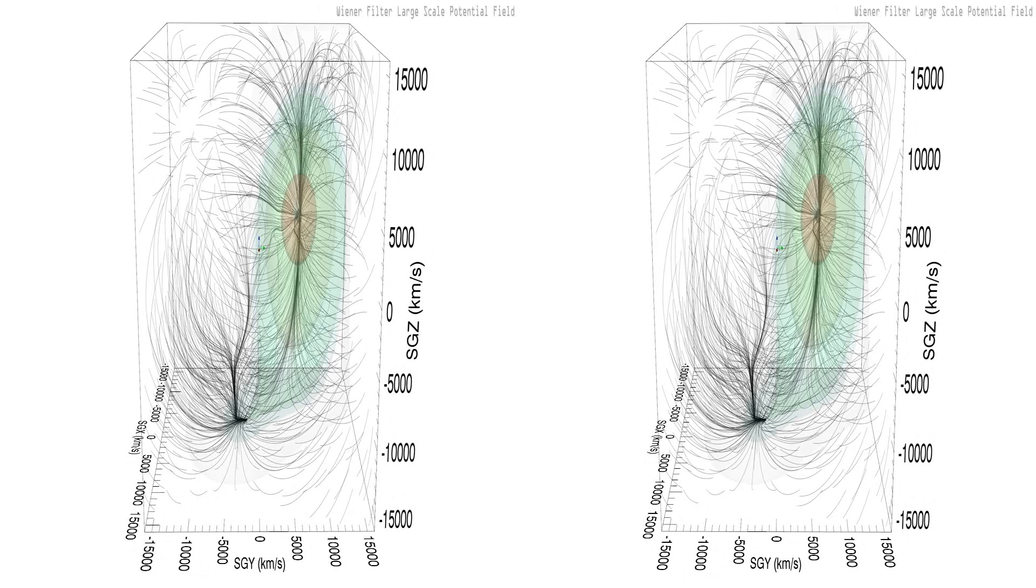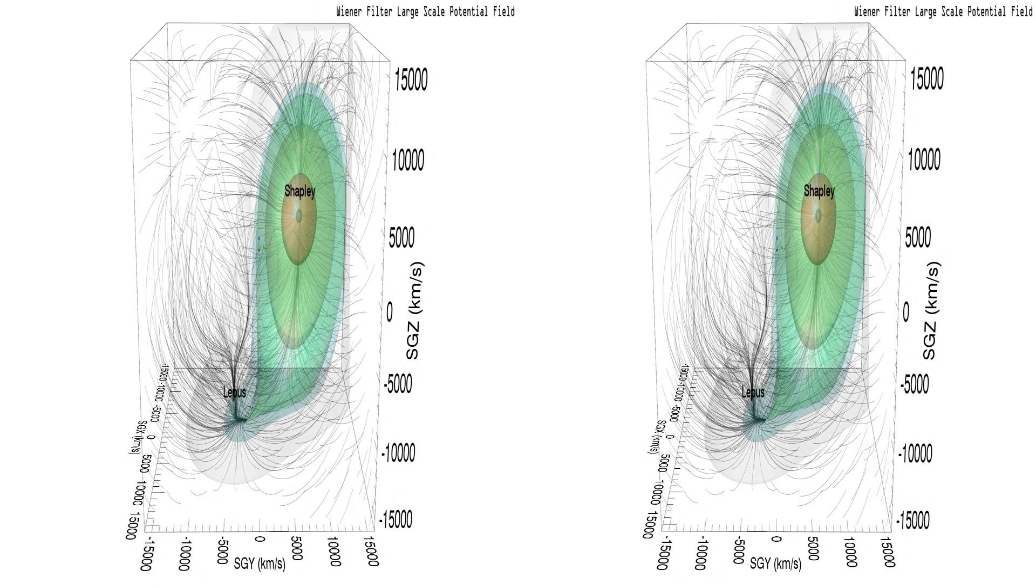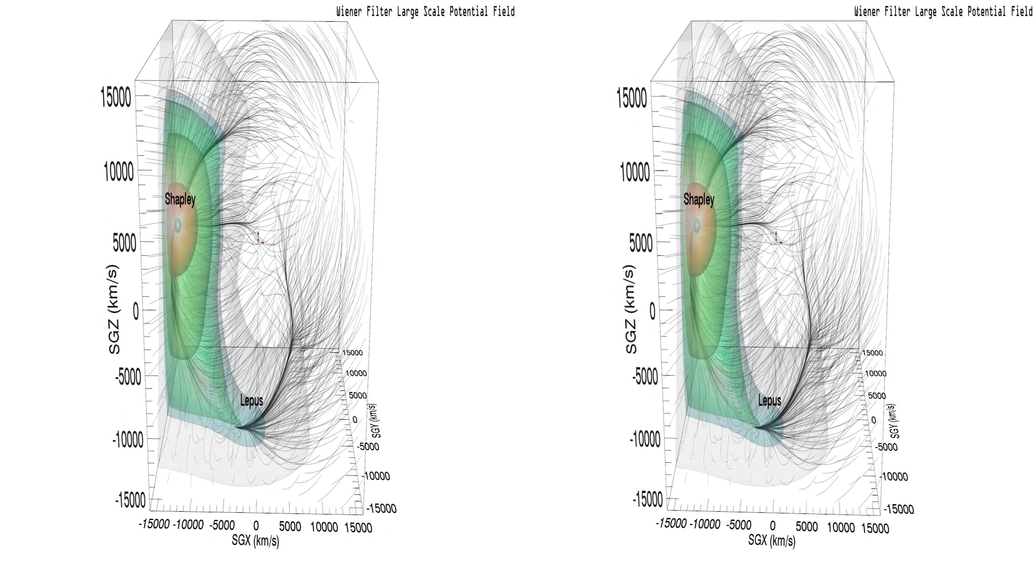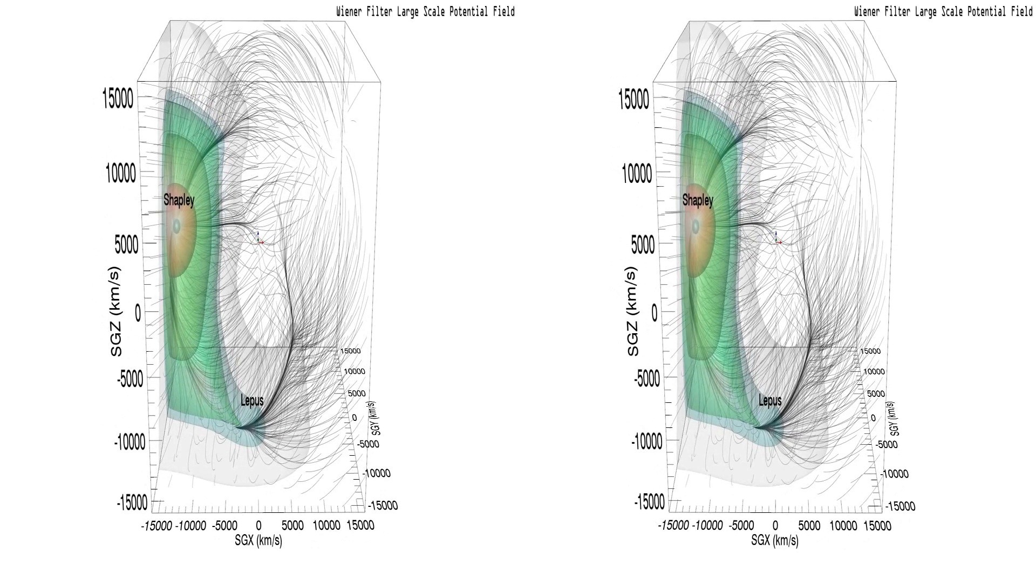Here we superimpose the potential field responsible for the peculiar velocity flow. The Shapley galaxy concentration is the dominant local feature. The secondary feature in the direction of Lepus appears to be connected.